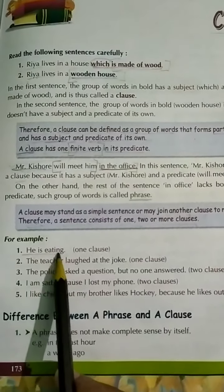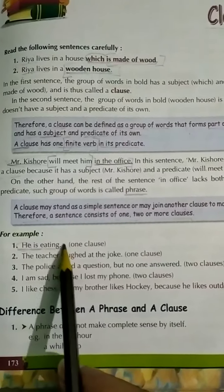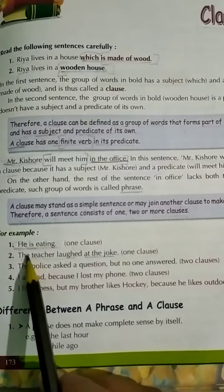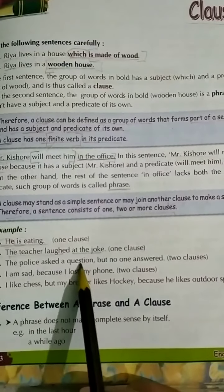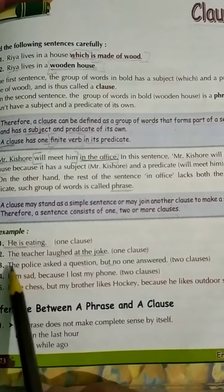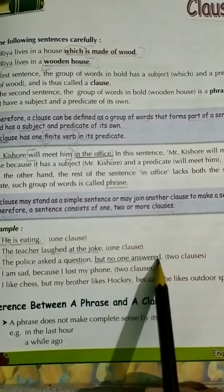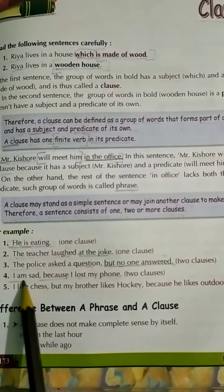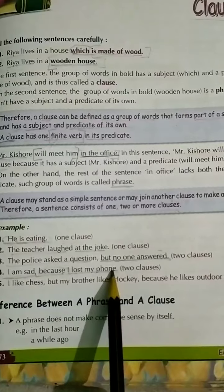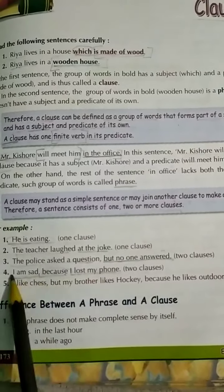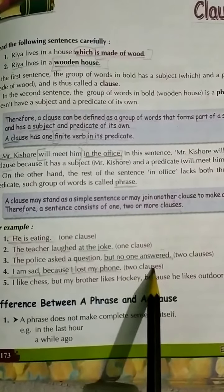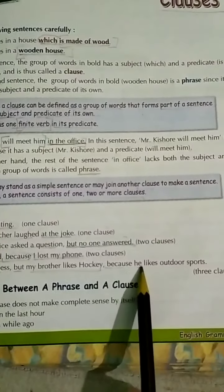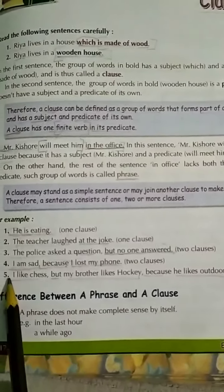Look at the examples. 'He is eating' — 'he' is the subject, 'is eating' is the predicate — this is one clause. 'The teacher laughed at the joke' — also one clause. 'The police asked a question, but no one answered' — this has two clauses. 'I am sad because I lost my phone' — here also we have two clauses combined to make one sentence.